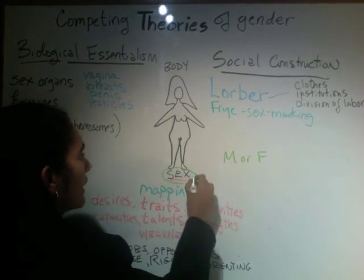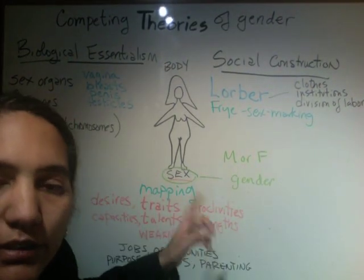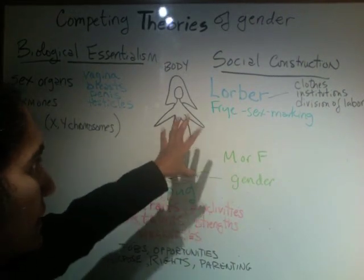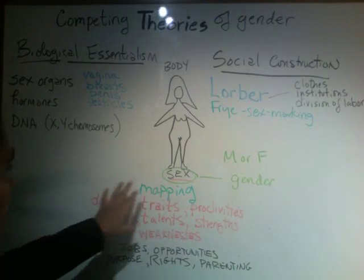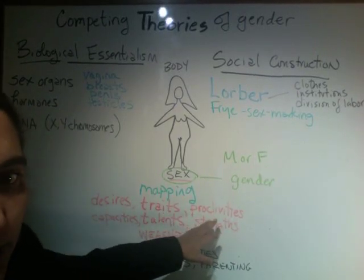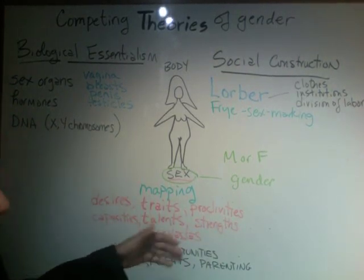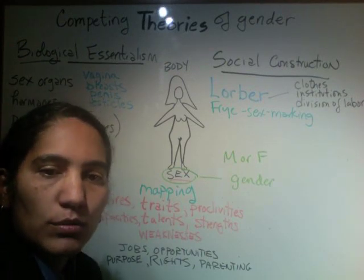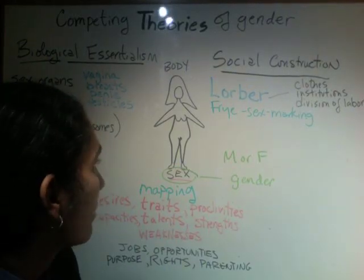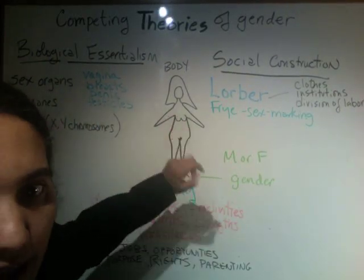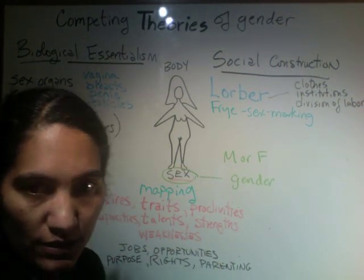In feminism, we actually distinguish sex from gender. The term sex refers to the actual biological sex of the body, and gender refers to a whole lot more than that — desires, traits, proclivities, capacities, talents, strengths, weaknesses — and it affects jobs, opportunities, and rights. We tend to use them interchangeably in everyday conversation, but biological sex refers to the body, and gender refers to masculine and feminine, the two genders.